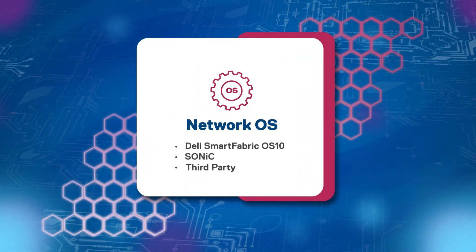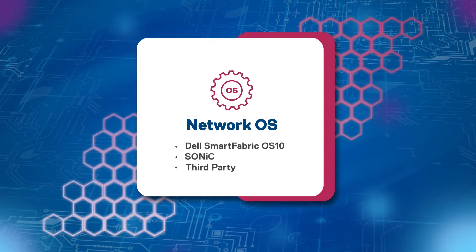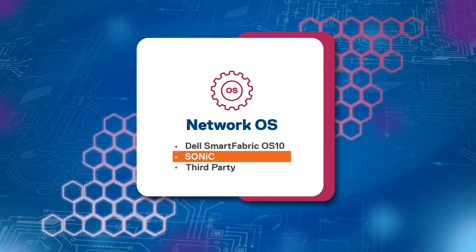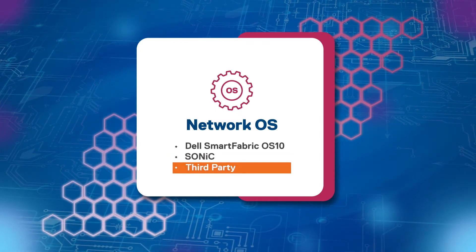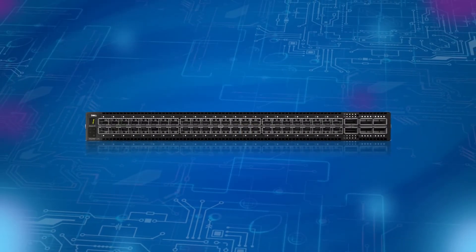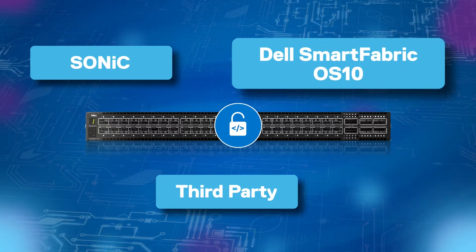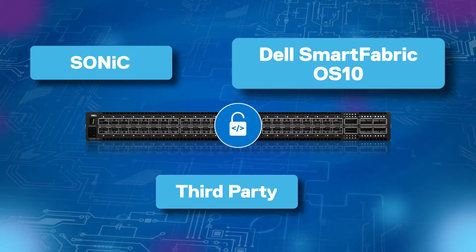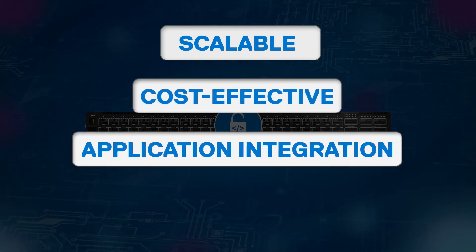The best practice options for implementing the network operating system on Bare Metal are Dell SmartFabric OS10, SONiC to Enterprise SONiC Distribution by Dell Technologies, and third-party software, vendor, and applications. With BMP, IT can adopt an open network hardware ecosystem, enabling end users to choose different network operating systems with automation and optimization, without worrying about a proprietary requirement from a single vendor for scalable, cost-effective application integration and efficiency.